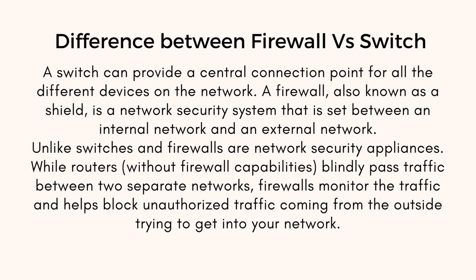A switch can provide a central connection point for all the different devices on the network. A firewall, also known as a shield, is a network security system set between an internal and external network. Unlike switches, firewalls are network security appliances, while routers without firewall capabilities blindly pass traffic between two separate networks. Firewalls monitor traffic and help block unauthorized traffic coming from outside trying to get into your network.